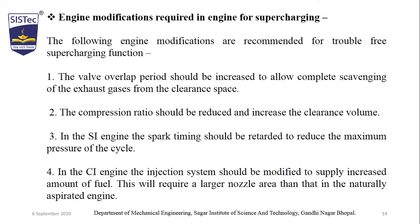Engine modifications required for adopting supercharging or turbocharging in the IC engine are as follows. First, the valve overlap period should be increased to allow complete scavenging of exhaust gases from the clearance space. Second, the compression ratio should be reduced to increase the clearance volume. Third, in the SI engine, spark timing should be retarded to reduce the maximum pressure of the cycle. Fourth, in the SI engine, the fuel injection system should be modified to supply an increased amount of fuel, requiring a larger nozzle area than in a naturally aspirated engine.